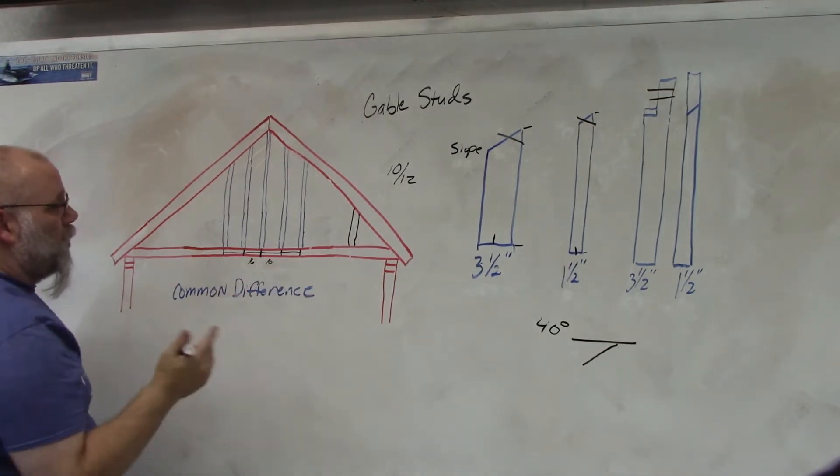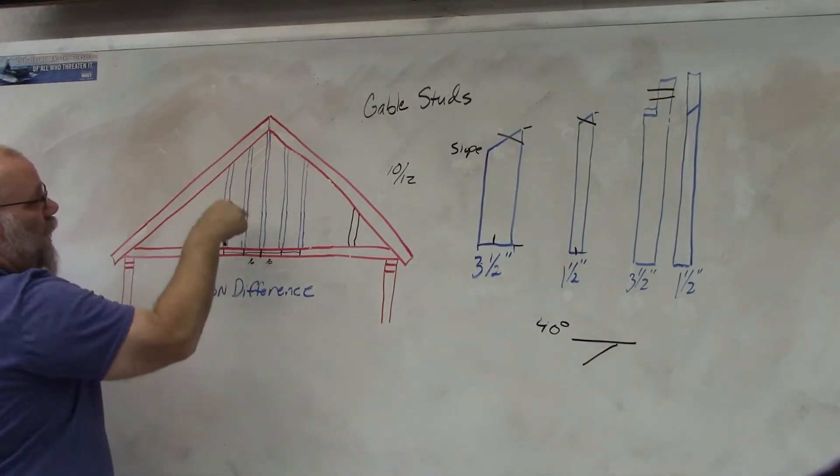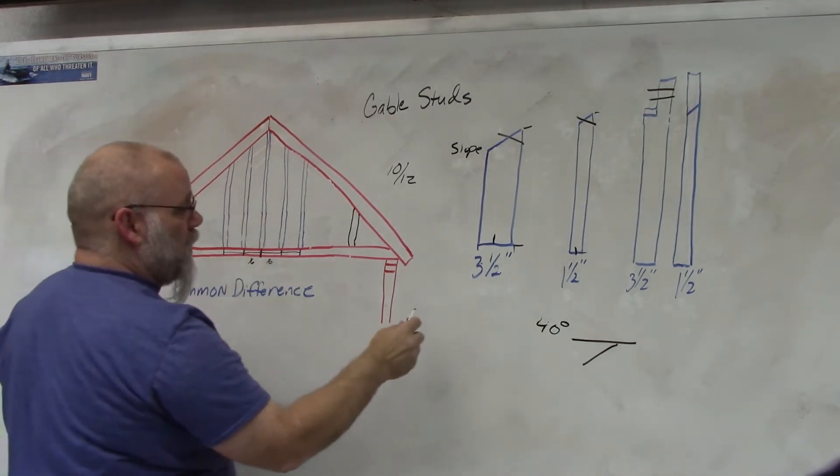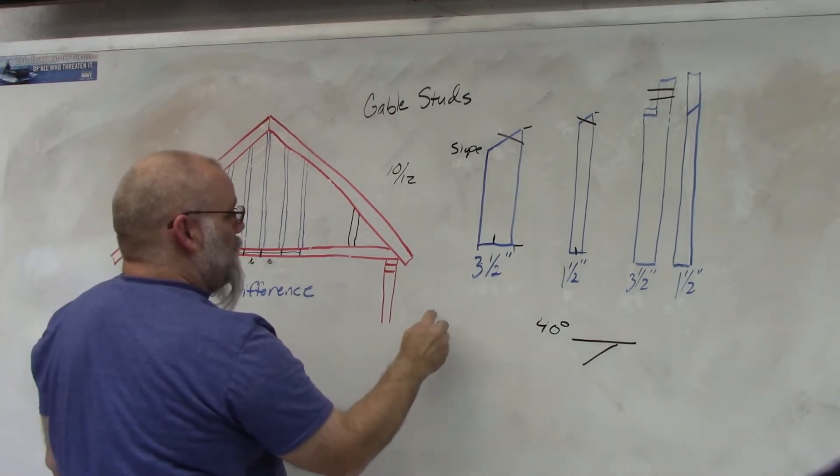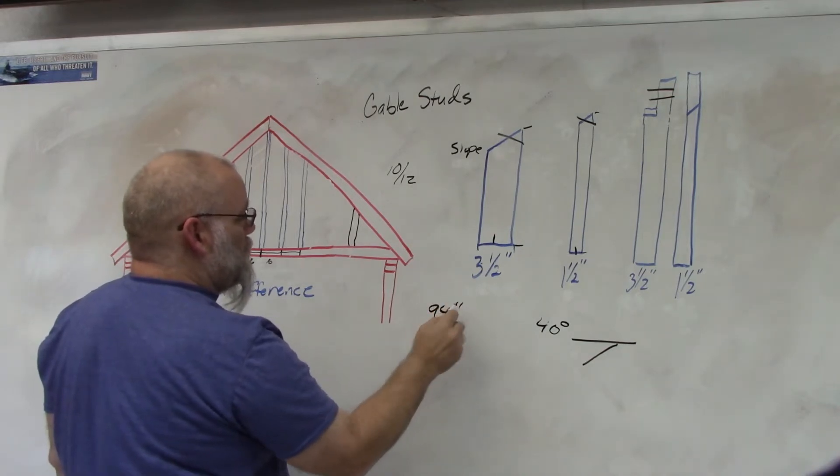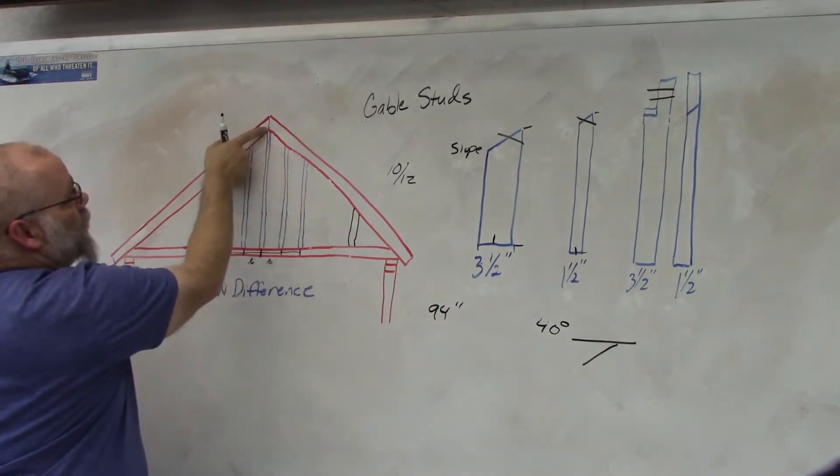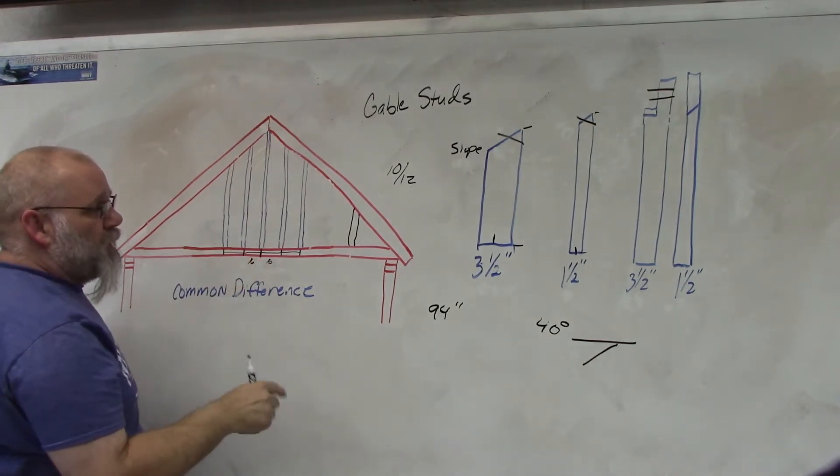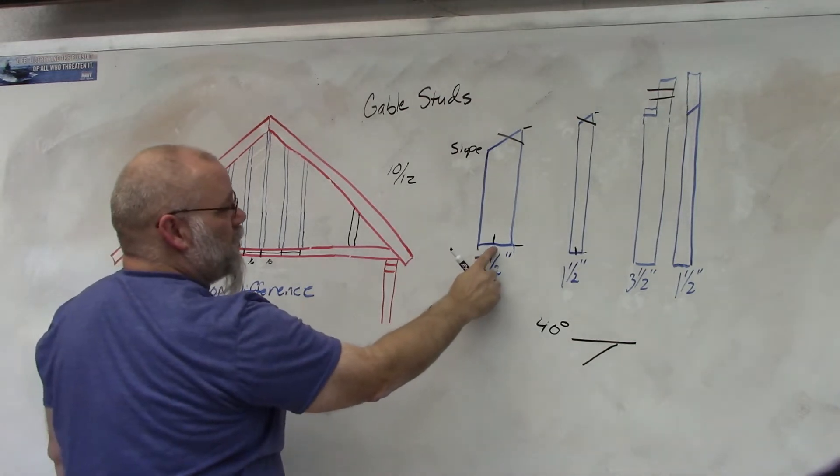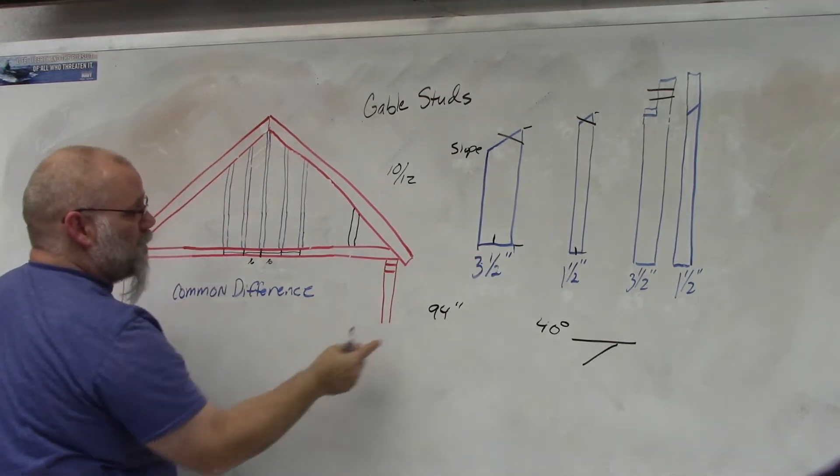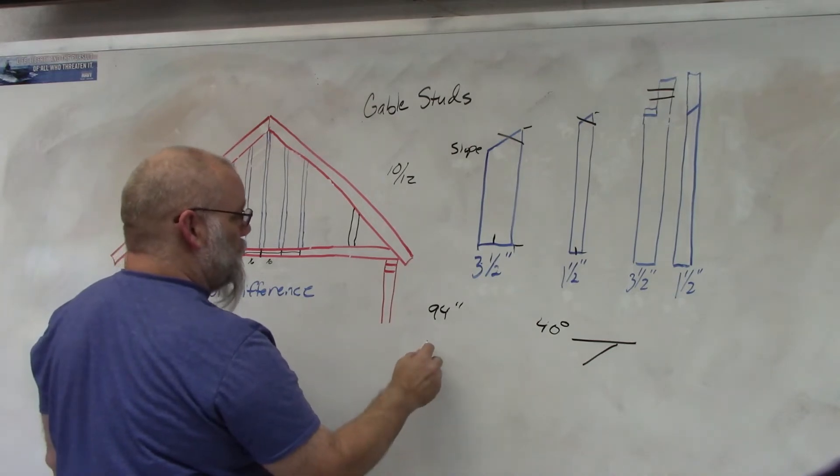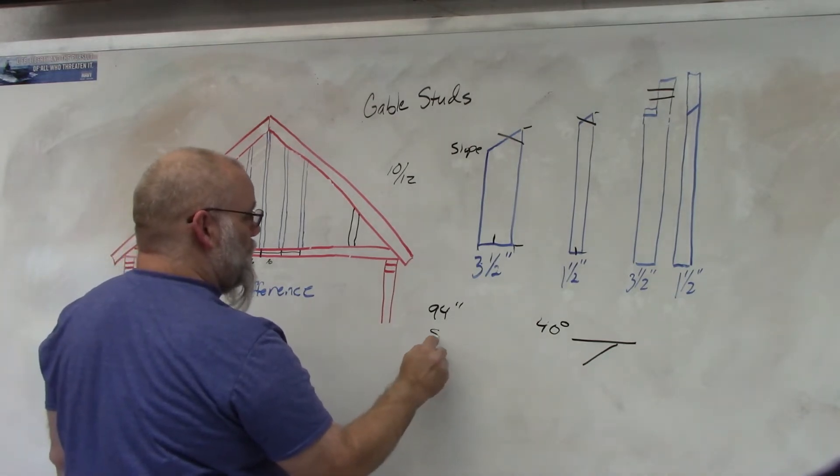Now in order to find the lengths of these all you have to do is measure the first one. So let's say the first one is 94 inches to the bottom of the peak right here down to here. That's from the center so you're measuring from the center so that's 94 inches. So let's say the next one down is 87 inches.